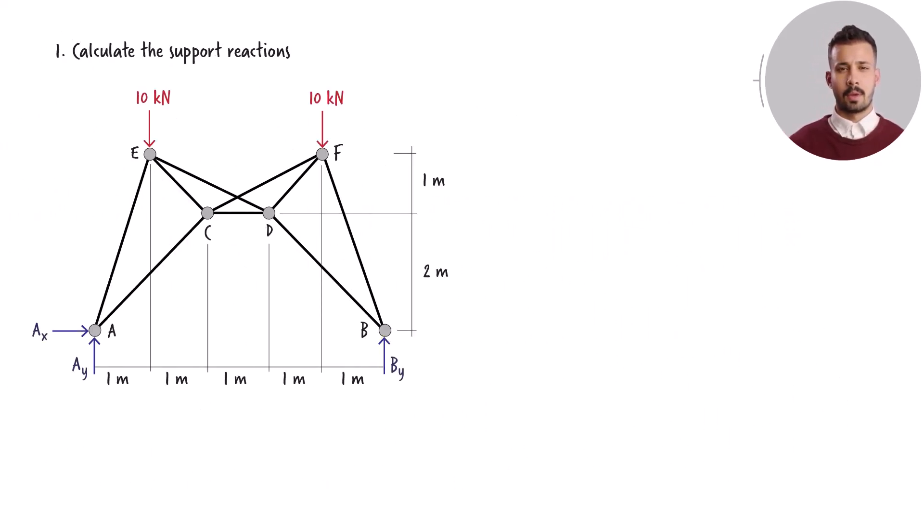To determine the support reactions, we initiate the process by sketching the free body diagram of the truss. This diagram shows the essential details of both the truss's geometry and topology, as well as the applied loads and support reactions. Note the unknown support reactions at nodes A and B - these are the forces that we want to determine in this step.